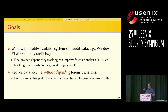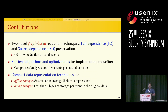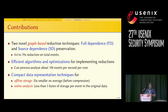Our second goal is to reduce data volume without changing the forensic analysis result, so events can be dropped that will not affect the outcome. Our main contribution is two novel graph-based reduction techniques called full dependence and source dependence preservation. Using these, we achieve 5 to 19 times reduction in the total number of events, and our algorithms can analyze the graph at 1 million events per second per core.